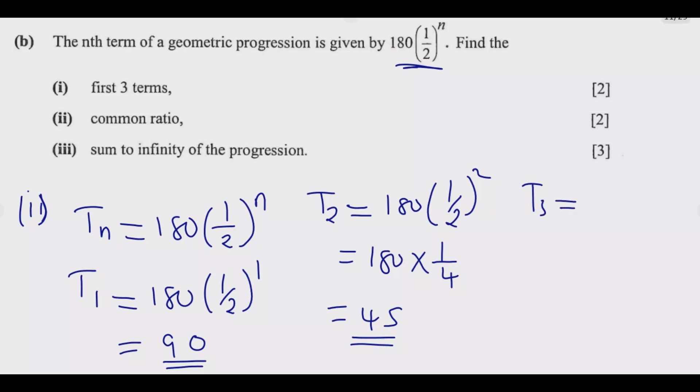Then I find T₃ which equals 180 then (1/2)³ which is going to give me 180 multiplied by 1/8 which is going to give me 22.5. These are the first three terms. Once you do that you get these two marks. Then we look at (ii), the common ratio.